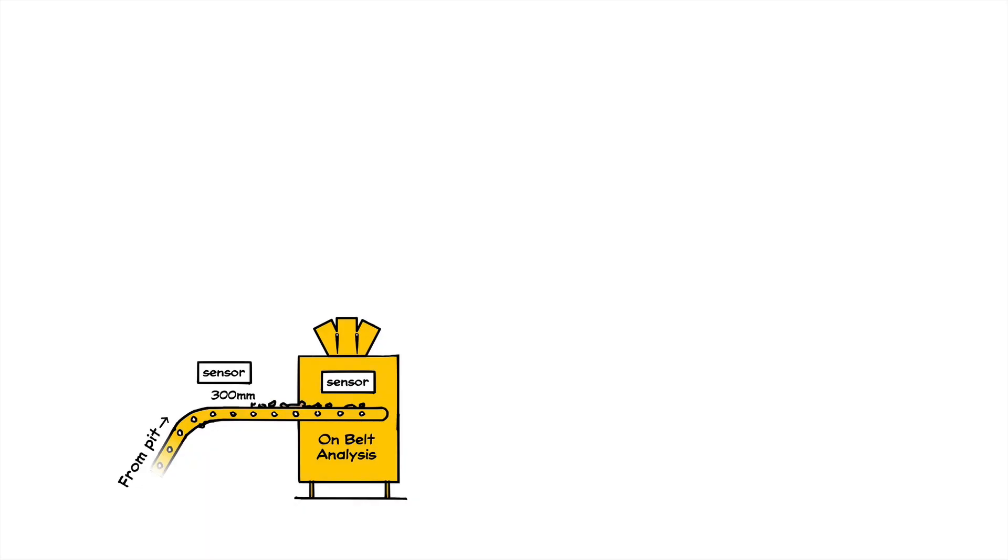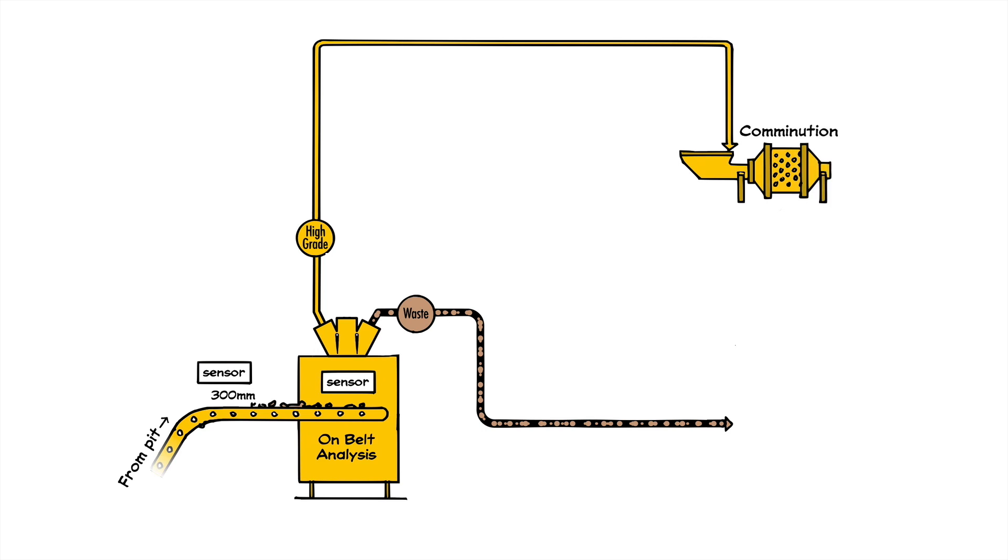After ore is passed through the belt sensor, any ore below the threshold of economic extraction is immediately diverted to waste. High-grade ore is diverted to the concentrator to maximize extraction of the most valuable minerals from the ore.